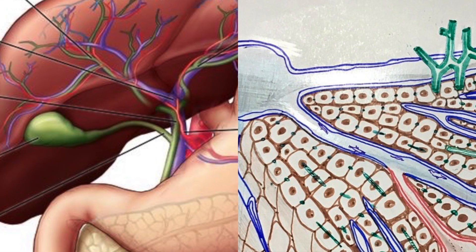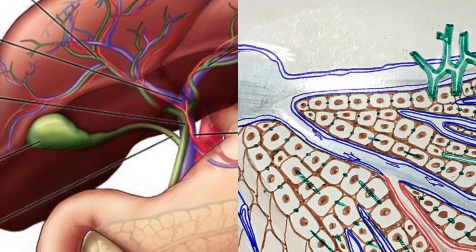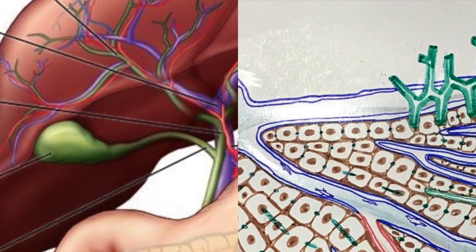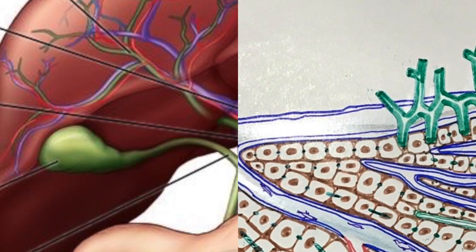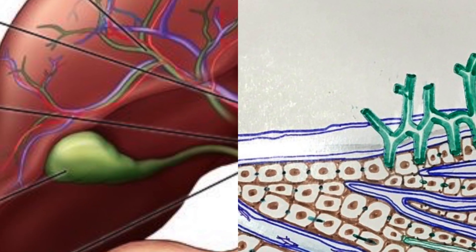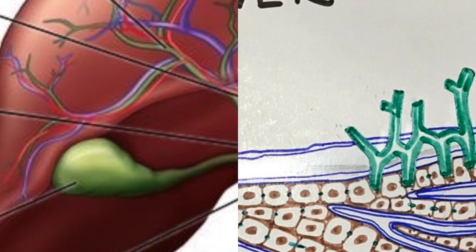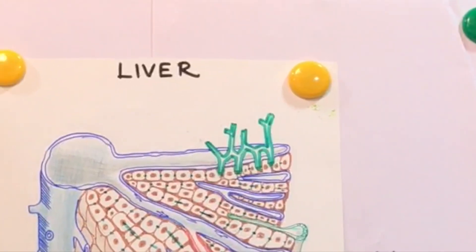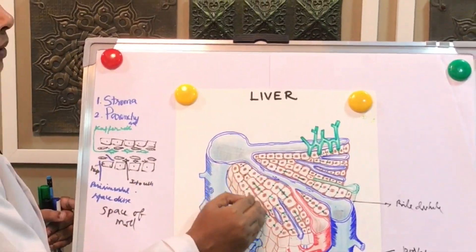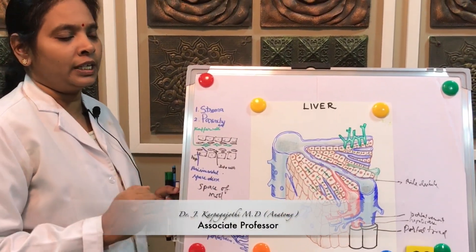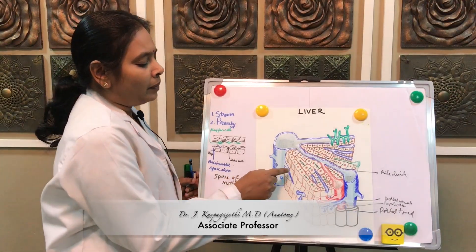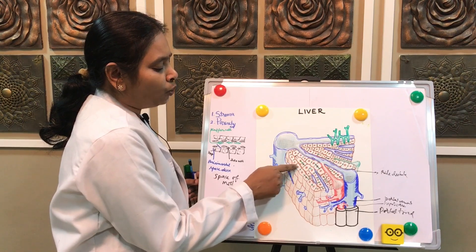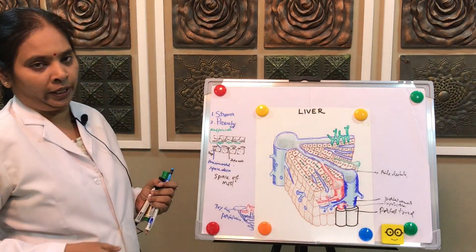Welcome students. In this class we are going to see about bile secretion and its excretion in the liver, the functional unit of the liver, the venous unit of the liver, and the hepatic acinus. The bile is secreted by the hepatocytes and released through a structure called bile canaliculi.